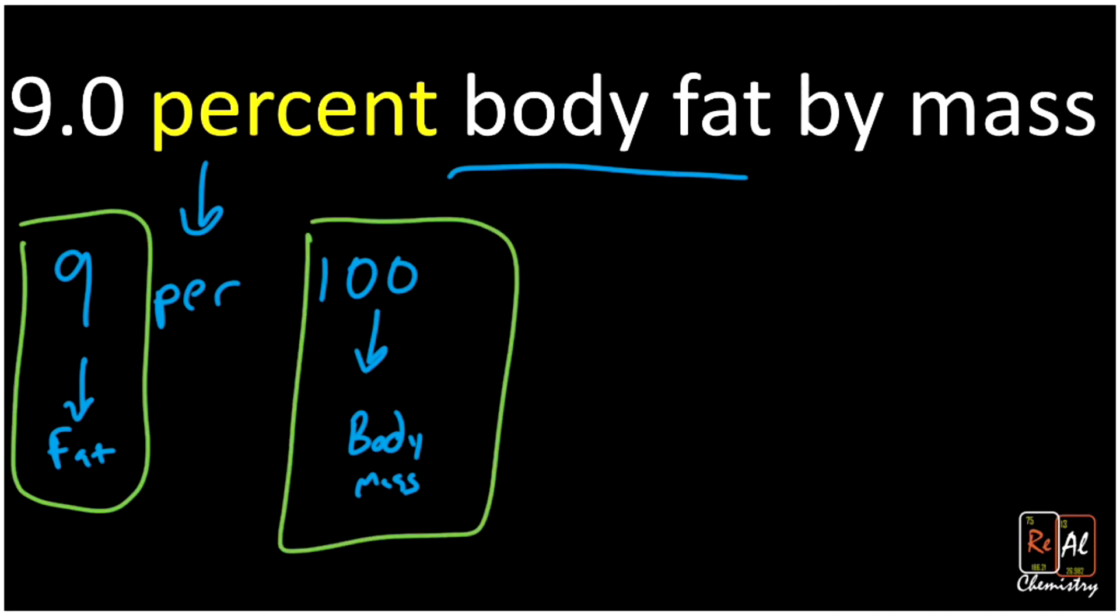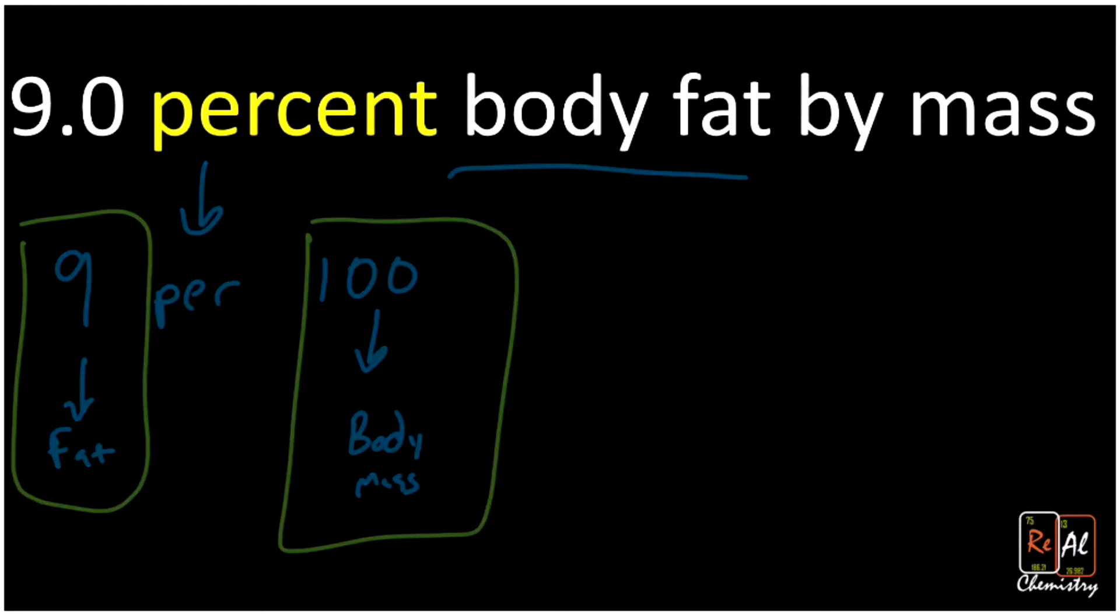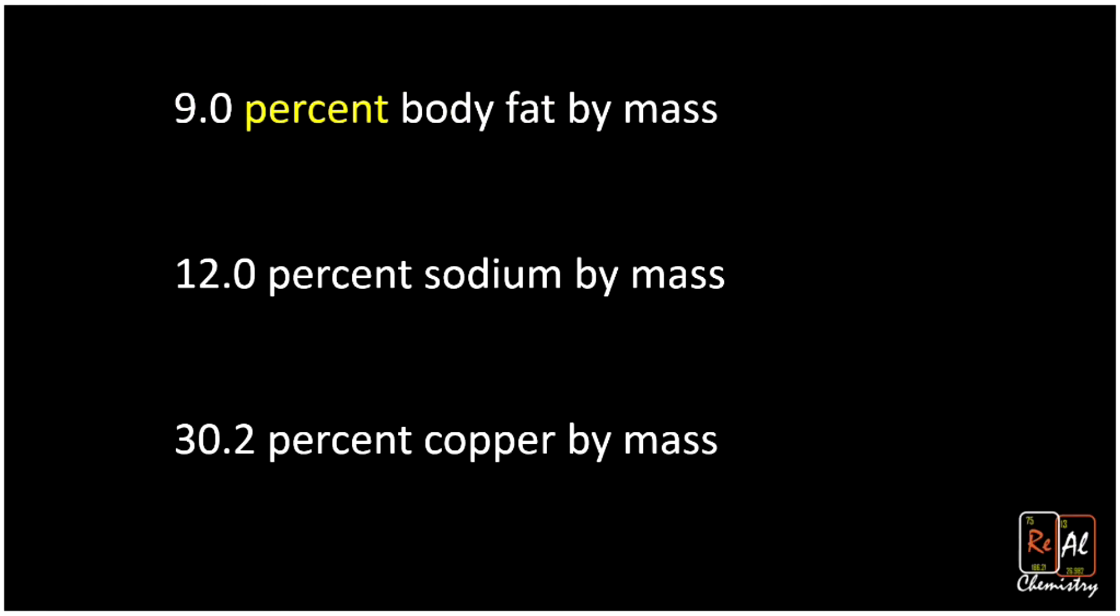Now we can use that in a problem. You might see this in terms of body fat, or you could see it in other chemistry problems as percent sodium, which is a chemical element, or you might see it as 30.2% copper by mass. All of these can become conversion factors.